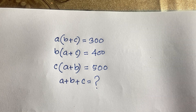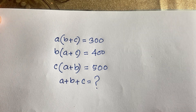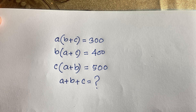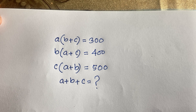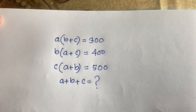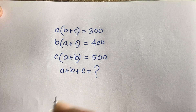Hello everyone. In this video we have solved this interesting math question. The question is: a times (b plus c) is equal to 300, b times (a plus c) is equal to 400, and c times (a plus b) is equal to 500. We find out what is the value of a plus b plus c.